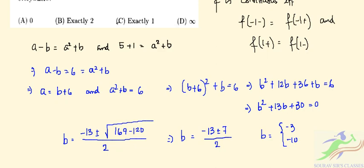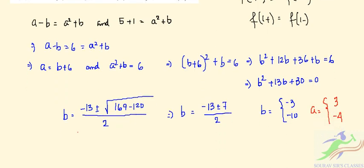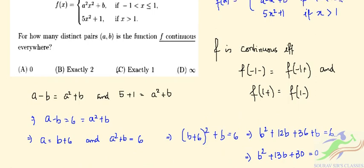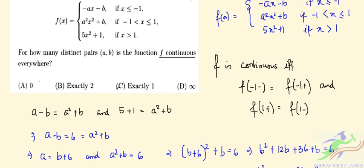So we get two values of B: one is minus 3 and another is minus 10. The corresponding values of A give us two distinct pairs: (3, minus 3) and (minus 4, minus 10). So the answer is exactly 2, and the correct option is B.